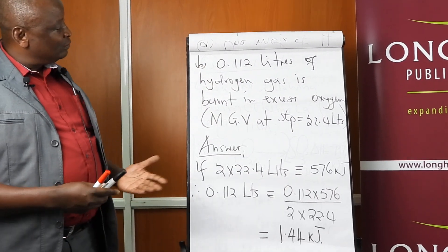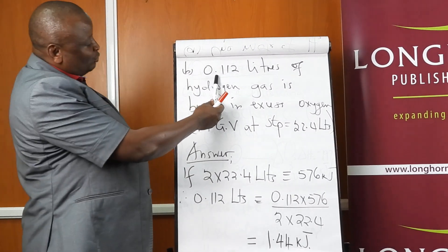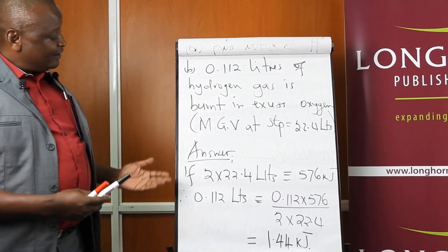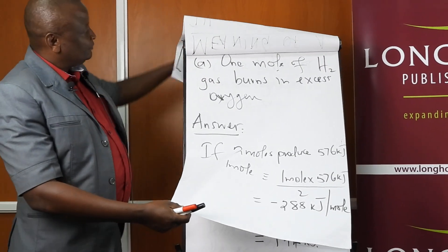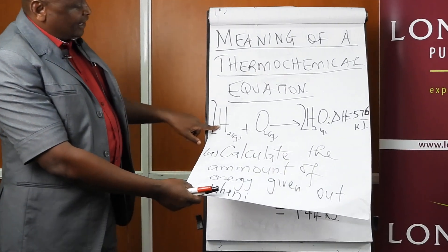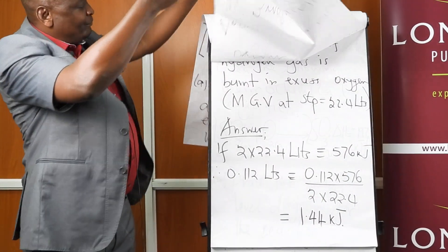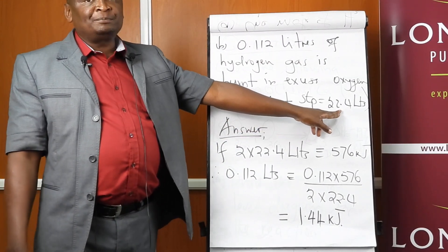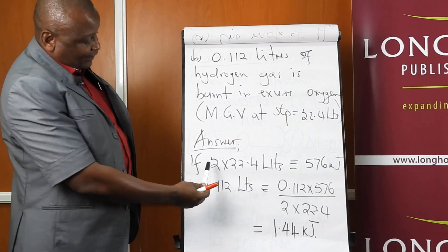We can also use the molar gas volume concept to calculate how much energy would be given out if a given volume of hydrogen gas is burnt in excess oxygen. From the equation, two moles of hydrogen gas give us that amount of energy, and from the molar gas volume concept, one mole of any gas at STP occupies 22.4 litres.